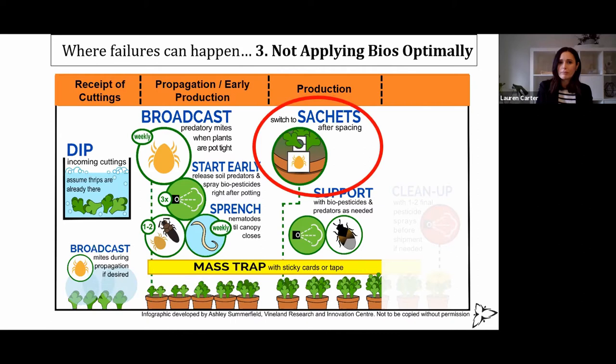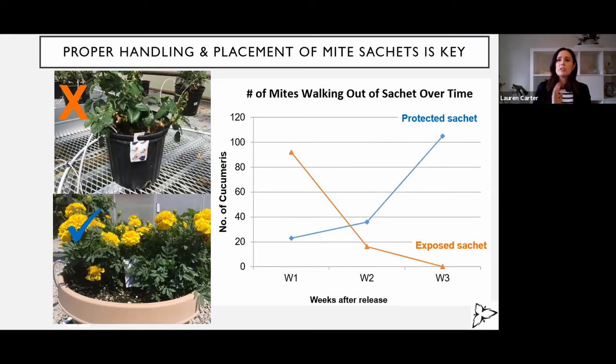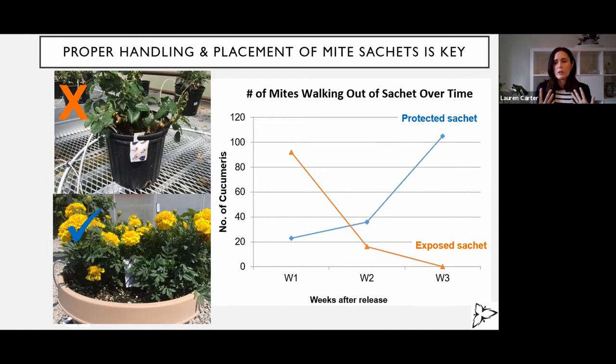A big place we saw this recently was with sachets. Rose Battenhouse at Vineland did some research about seven years ago on the proper handling and placement of mite sachets and how critical that is. The sachets are kind of like a mite condo — they've got bran in them, then yeast which feeds on the bran, then cereal mites which feed on the yeast, and then predatory mites which feed on the cereal mites. All of that gives you a little ecosystem where predatory mites are supposed to walk out over a long period of time.